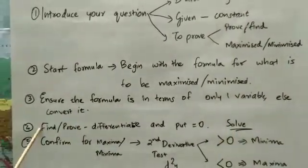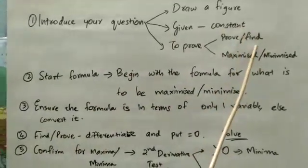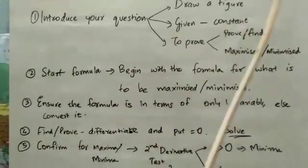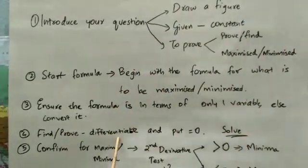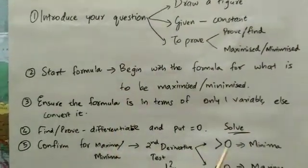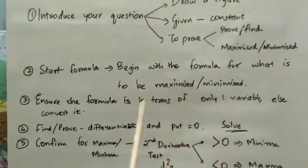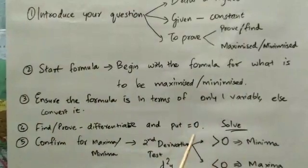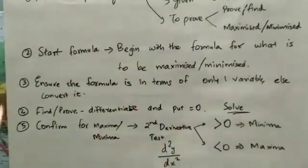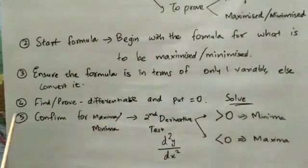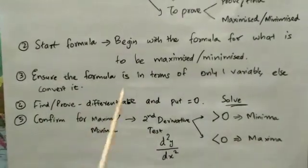Step 4: Find the derivative. Differentiate the formula and set it equal to 0, then solve. Final step: confirm for maxima or minima.